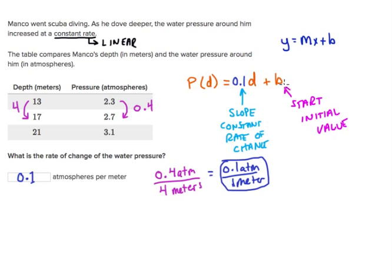Now we want to find our initial value. The strategies to do this will vary depending on the values given in the table. One method is to go back until we get to 0, where the y-intercept occurs. Or we could plug in a given value into the equation and solve for b.